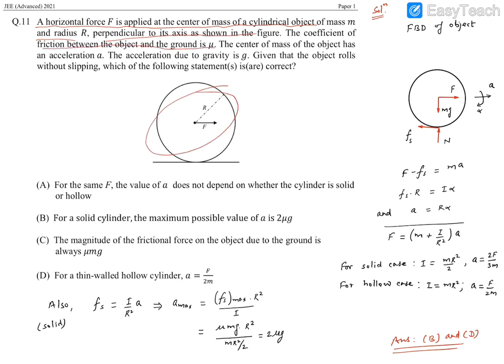The coefficient of friction between the object and ground is μ. The center of mass of the object is moving with acceleration a. Acceleration due to gravity is g. Given that the object is rolling without slipping, we need to find the correct statements out of the four given. First, we need to simplify this equation.